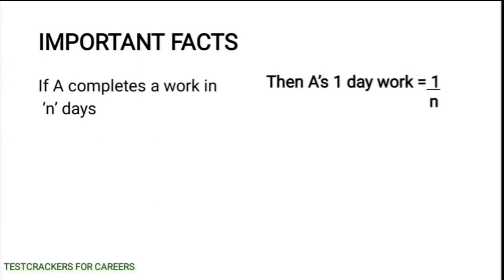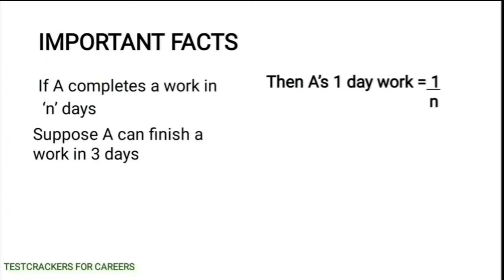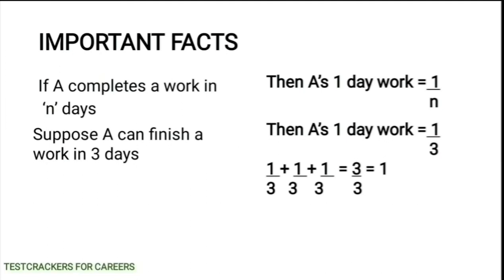A completes her work in n days, then A's one day work is 1 by n. Suppose A can finish her work in 3 days, then A's one day work is 1 by 3. That is, A will do 1 by 3rd of the work on the first day, 1 by 3rd on the second day, and the remaining 1 by 3rd on the third day, completing the whole work in 3 days.